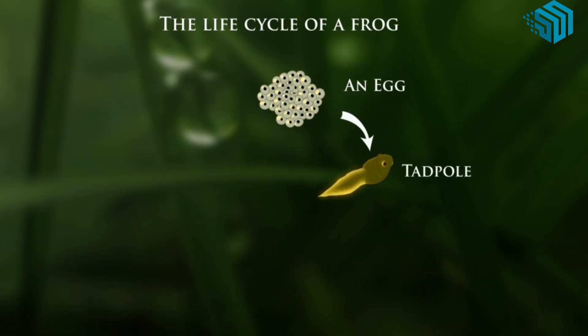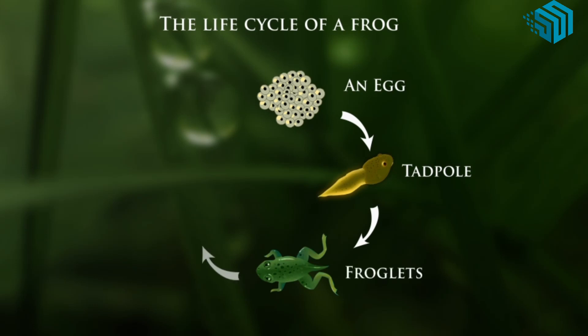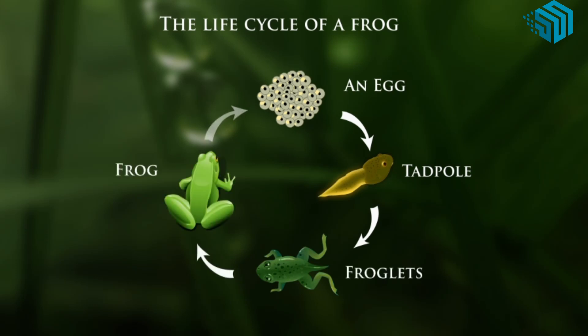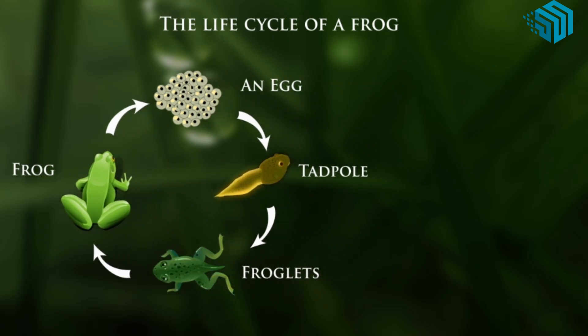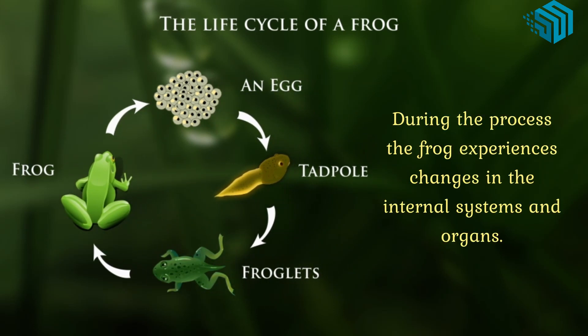The four stages are egg, tadpole, froglet, and adult. During the process, the frog experiences changes in the internal system and organs.